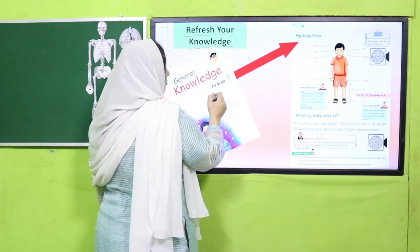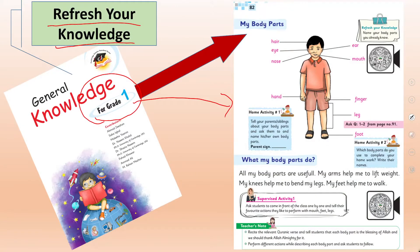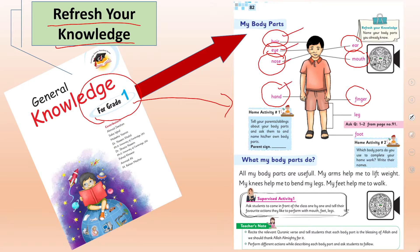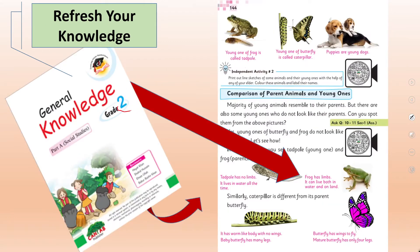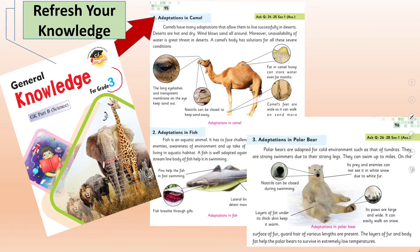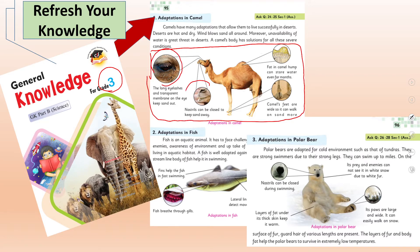Let us refresh our knowledge from previous grades. In Grade 1, you identified external body organs in human structure — body parts you can easily see, like eye, nose, and hand. In Grade 2, you studied specific organs found in certain animals and body structures that differ compared to human body structures. In Grade 3, you learned which specific body structures develop in animals living in particular environments, enabling them to exist in those environments.